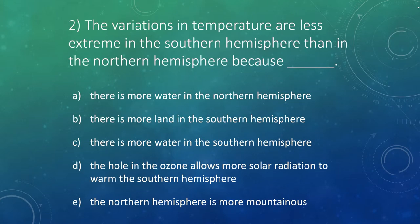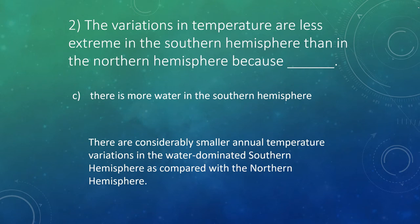Question two: the variations in temperature are less extreme in the southern hemisphere than in the northern hemisphere, because why? This has to do with the differential heating of land and water. It is because there is more water in the southern hemisphere, resulting in smaller changes in temperature.